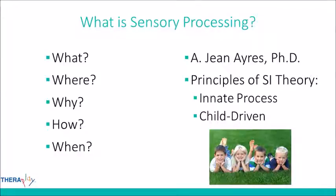Sensory integration happens automatically as we take in senses through sensory receptors in our skin, ears, muscles, eyes, mouth, nose, and so on. The 'when' — sensory integration actually begins in utero and then continues to develop throughout childhood. Usually by adolescence, most functions are established.